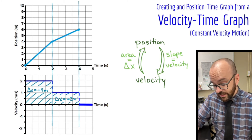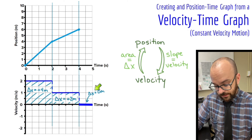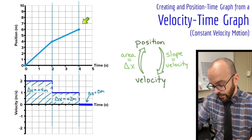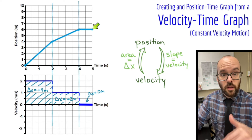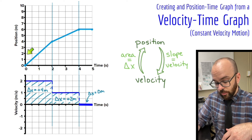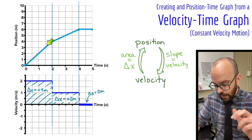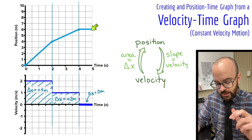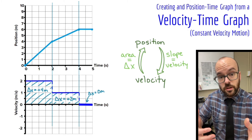For the last interval, my velocity is zero, so the area is zero — a displacement of zero meters. Starting at six meters, that position doesn't change, so I get a horizontal line in that last section. We've now converted from a velocity time graph to a position time graph showing the same motion: moving quickly forward, then slower forward, then stopped. Reading either graph should describe the same motion.